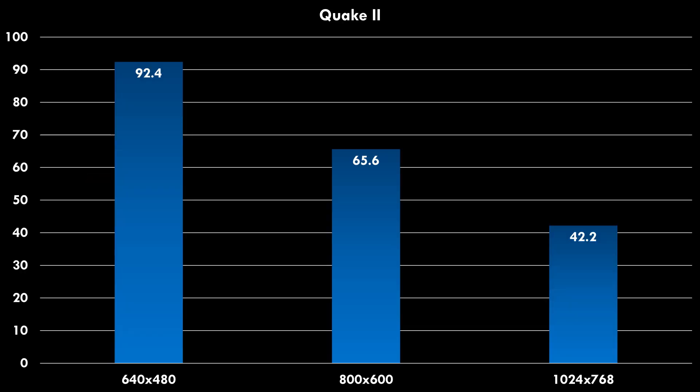I have some benchmarks here. Quake 2 running in software mode at various resolutions — the higher the resolution, the lower the performance. 800 by 600 seems to be a good blend between visual fidelity and performance; we're getting 65.6 fps. All the games captured for this video are running at 800 by 600.